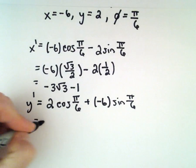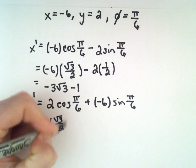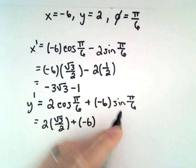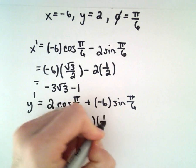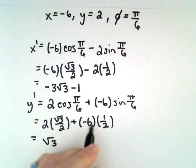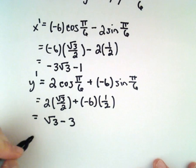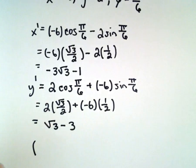Simplifying: cosine of π/6 is √3/2, and sine of π/6 is 1/2. We get √3 - 3 for the value of y'.